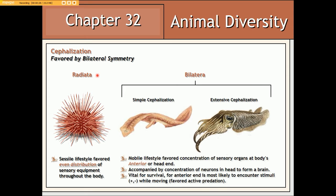All other eumetazoan animals are placed in the group Bilatera, for they exhibit bilateral body symmetry. These animals are by and large mobile, and therefore natural selection would have favored the concentration of sensory neurons towards the head end or anterior end of the animal's body. This is an evolutionary trend known as cephalization — with the root 'ceph' referring to head or brain. This would have been adaptive because the anterior end enters a region first, allowing the animal to quickly respond to stimuli such as the appearance of a predator, prey, or any other vital environmental cue.